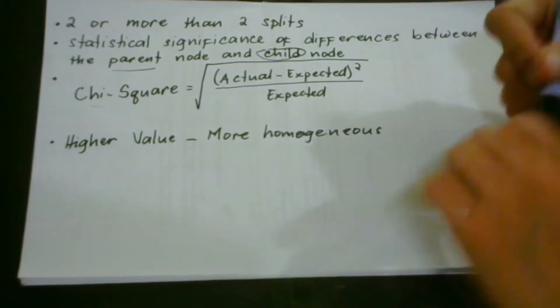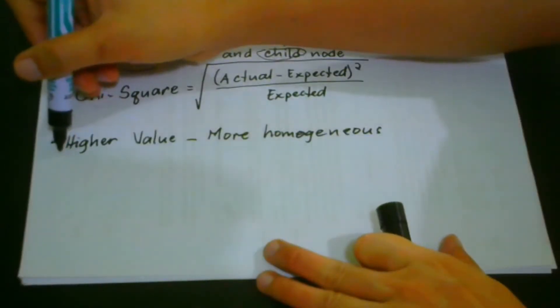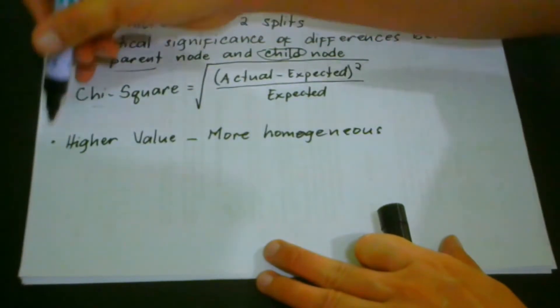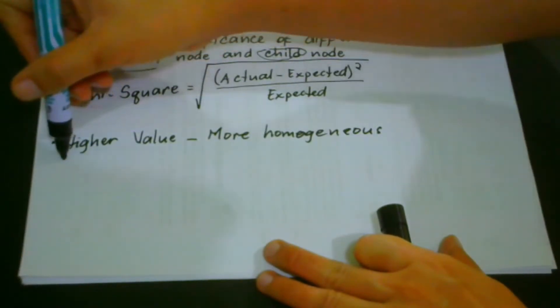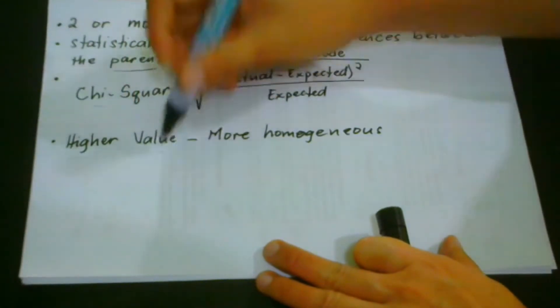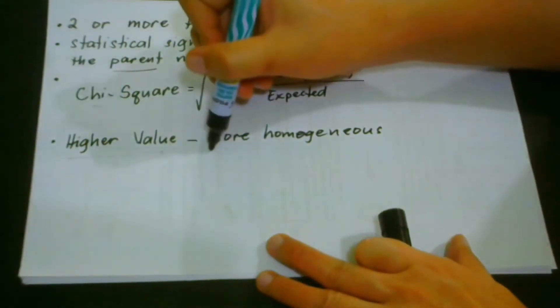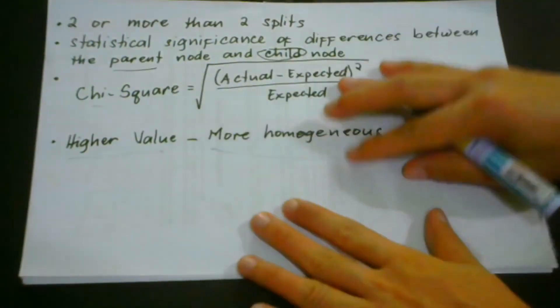And so here, we have to evaluate the outcome. And when we have a higher value, it means that our split is more homogeneous.